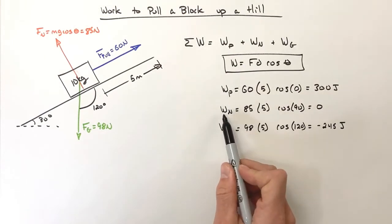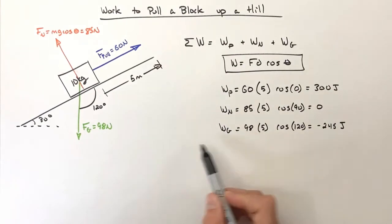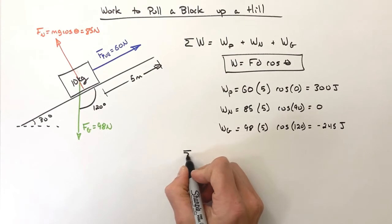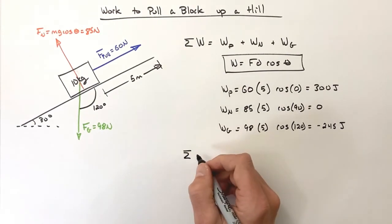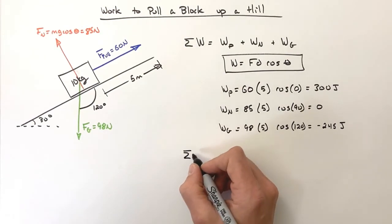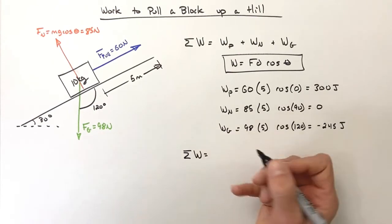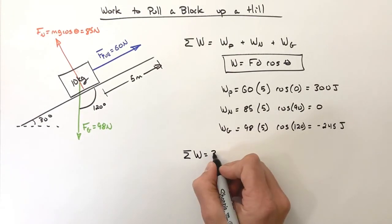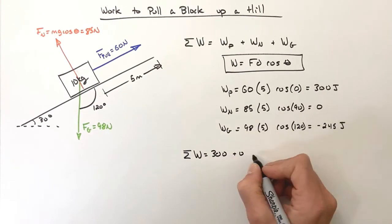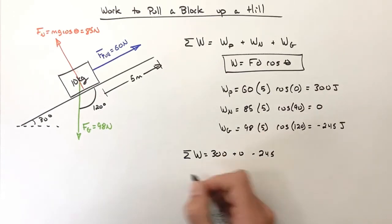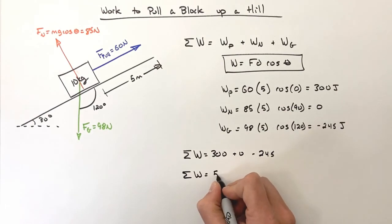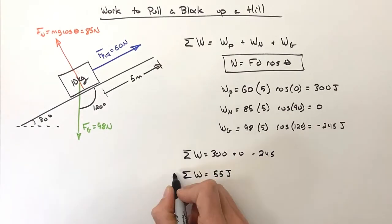So here we have the work by each force individually. Now we're going to find the total work, or the sum of all works, or even the network - done on the block. It's 300 plus 0 minus 245, so the total work done on the block is 55 joules.